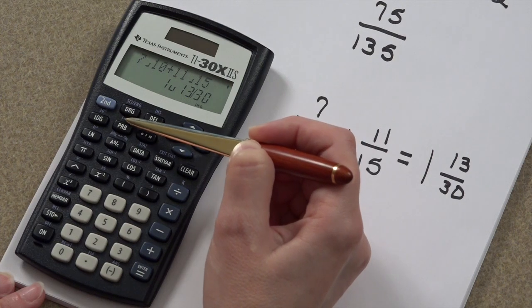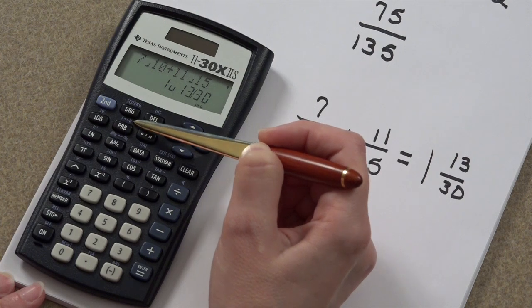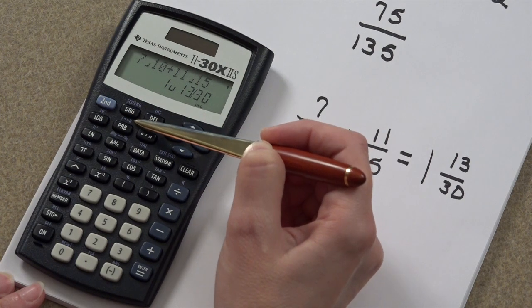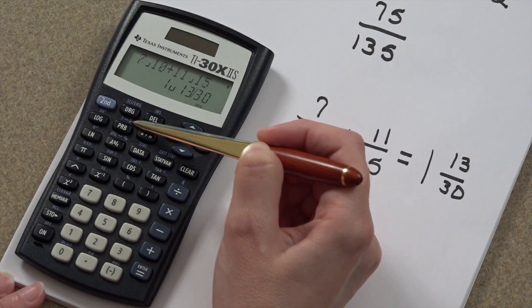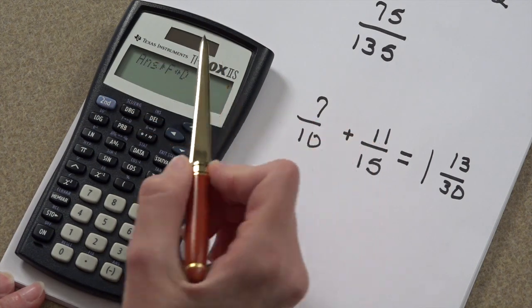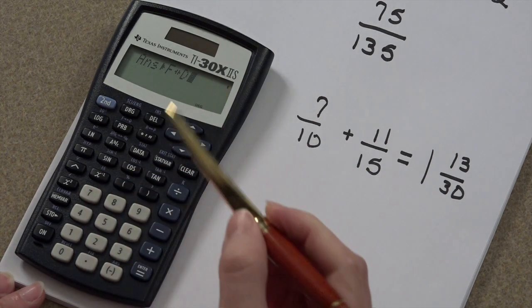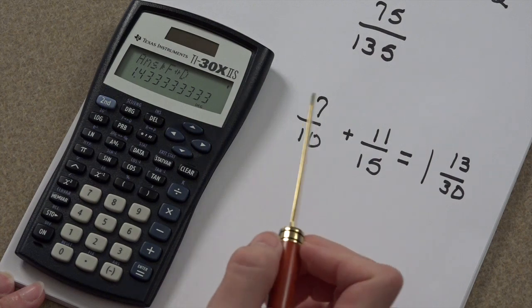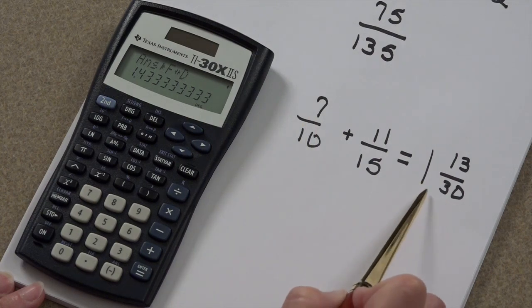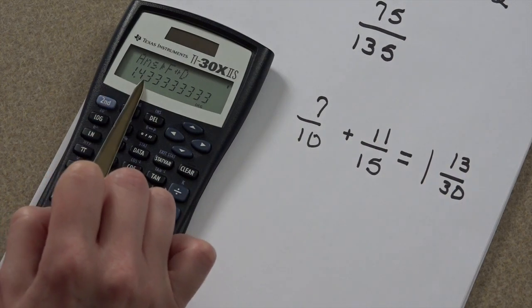Now, because we have these two arrows, it can go either way. Fraction to decimal, decimal to fraction. And again, that command is sitting above a button, so we must hit the second key first. Now it's asking me, would you like me to change your format? Yes, please. So the equivalent decimal to 1 and 13 thirtieths is 1.43.